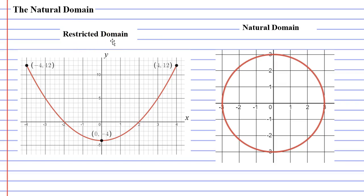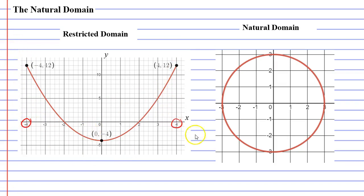This is something we spoke about in the previous video. We would take something such as this parabola, which usually goes on forever — it would normally have arrows coming out — but this parabola has had its domain restricted. We've taken off these arrows. The domain has been restricted to x values between negative 4 and positive 4. The graph does not exist to the left of negative 4, and doesn't exist to the right of positive 4.